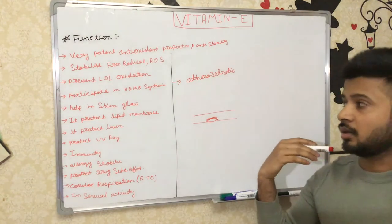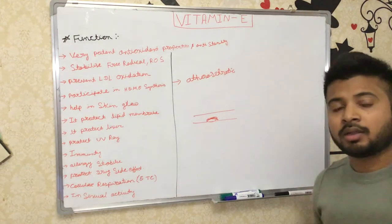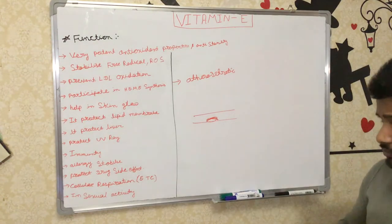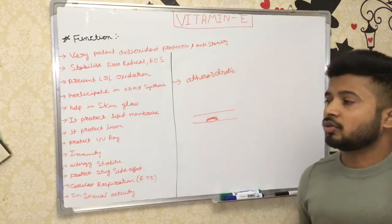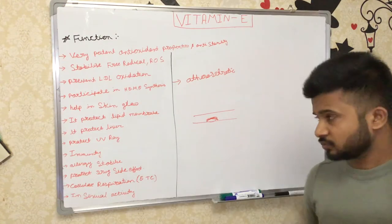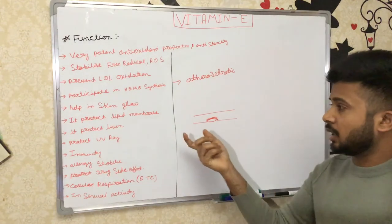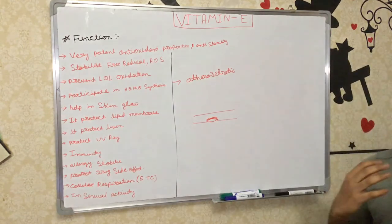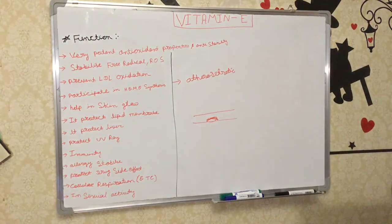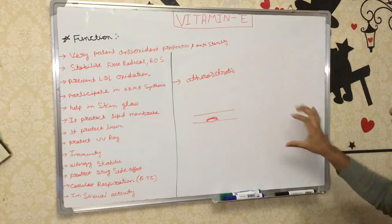Next, Vitamin E participates in heme synthesis, making it very important in pregnant women and older persons. It also helps with skin glow — that is why Vitamin E is called the 'beauty vitamin.' It maintains the mucous membrane and works synergistically with Vitamin A for skin glow. It also helps stabilize skin and reduce wrinkles, because it protects the lipid membrane by the antioxidant mechanism I already described.